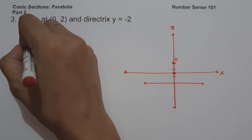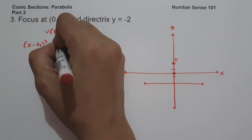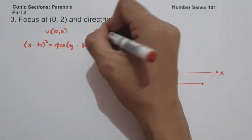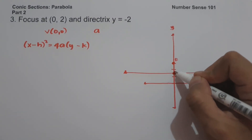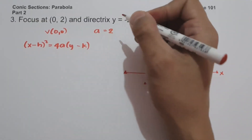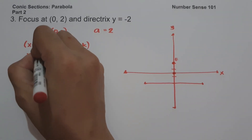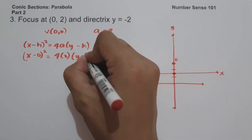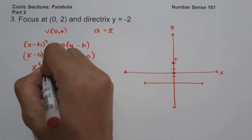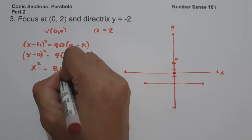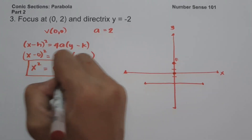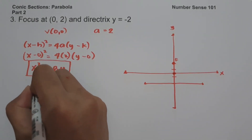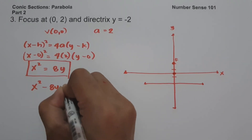To find the value of a, we count the distance from the vertex to the focus: that is 1 and 2, so the focal length a = 2. We have (x − 0)² = 4 × 2 × (y − 0), which gives x² = 8y. This is the standard form. The general form is x² − 8y = 0.